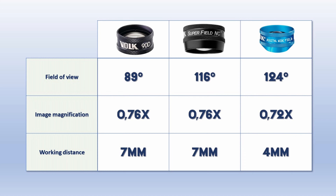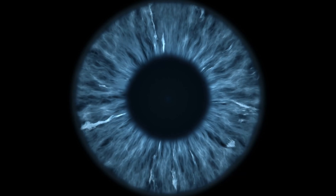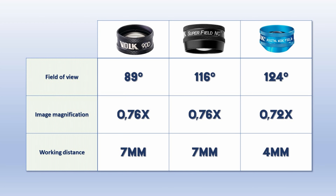The last factor to consider as a beginner is how easy it is to see the retina in an undilated patient. As a rule of thumb, the bigger the lens and the closer it has to be to the eye, the harder it is to get a clear picture without a dilated pupil. So from left to right in the table, it gets harder and harder.